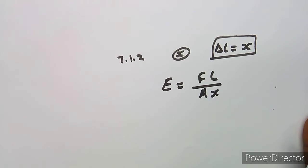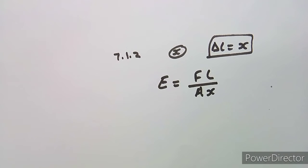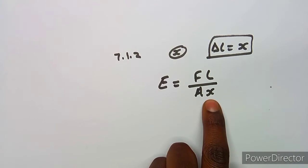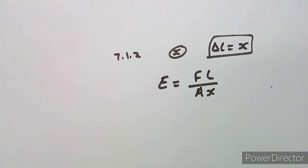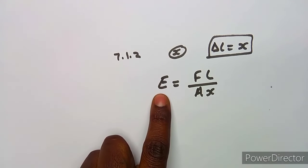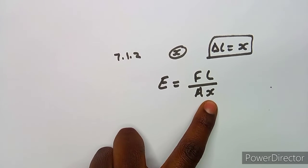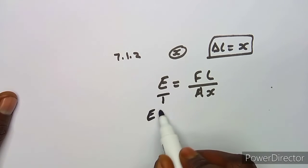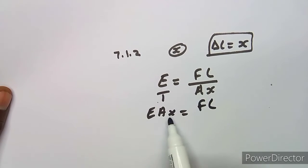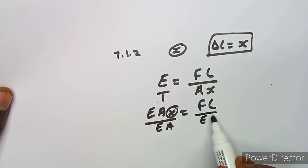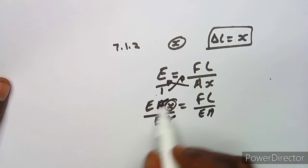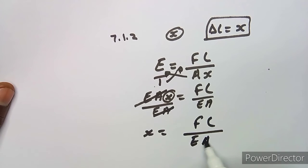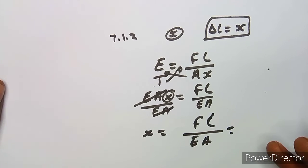The formula given in our formula sheet is: E equals FL over Ax, where F is the force, L is the length, A is the area, and x is the change in length — the extension or decrease in length. We have E, F, L, and A, so let us make x the subject. Cross-multiplying gives E·A·x equals F·L, then dividing both sides by E·A gives x equals FL over EA.